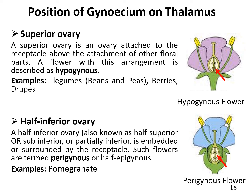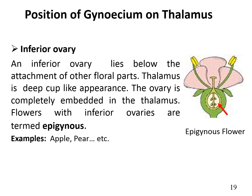The second type of ovary is called half-inferior, also called half-superior, sub-inferior, or partially inferior. In this type, the ovary is half-embedded in the receptacle. Such flowers are termed perigynous or half-epigynous. An example is pomegranate. The third type is the inferior ovary, in which the ovary lies below the attachment of the floral parts. The thalamus has a deep, cup-like appearance, and the ovary is completely embedded in it. Flowers with inferior ovaries are termed epigynous. Examples are apple and pear.